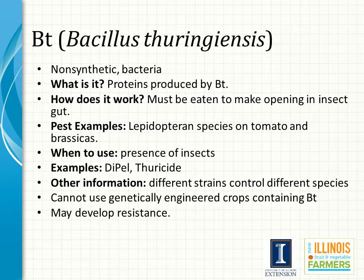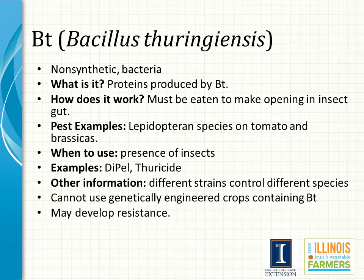Bt, or Bacillus thuringiensis, is a non-synthetic bacteria within the microbial category. Bt produces proteins which must be eaten to make an opening in the insect guts. The primary target for Bt is Lepidoptera — butterflies, moths, and caterpillars — especially ones that affect tomato and brassicas. Two examples of Bt are Dipel and Thuricide. Additionally, there are different strains available that can control different species. While we cannot use genetically-introduced crops containing Bt, we can use the bacteria itself in organic production. One word of caution is that insects may develop resistance to the Bt strains and the proteins that are produced by Bt.